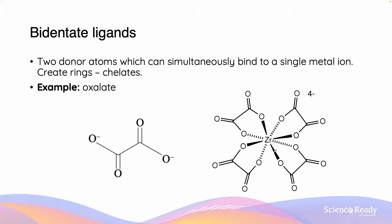Another type of ligand is the bidentate ligand. A bidentate ligand, as the name suggests, has two donor atoms which can simultaneously bind to a single metal ion. When this occurs, they lead to the formation of rings called chelates. An example of a bidentate ligand is oxalate. The oxalate ion has two lone pairs on each of the end oxygens, and on the right hand side there are a total of four oxalate ligands attached to the zirconium ion, each forming two coordinate covalent bonds. The coordination number refers to the number of attached atoms, so although there are only four ligands, the coordination number is eight since there are eight coordinate covalent bonds and eight attached atoms.